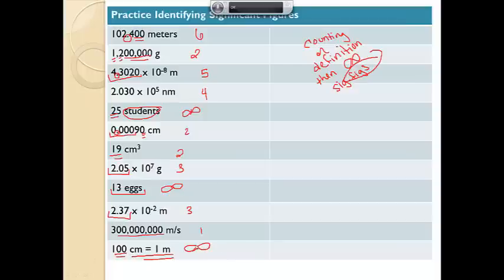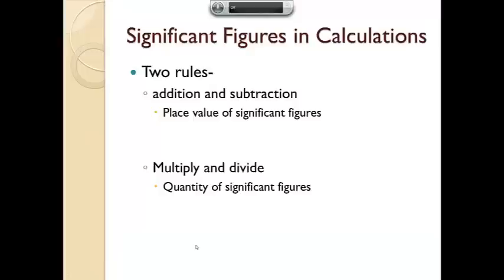Now that we got the number significant figures right and being able to identify them, let's start discussing how to use them in calculations. There's two sets of rules. There's adding, subtracting, and there's multiplying and dividing. With adding and subtracting, we depended on the significant figures. On the place value of the significant figures. With multiplying and dividing, we're looking at the quantity of significant figures. I'll explain further.